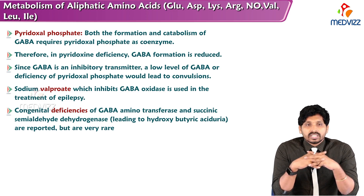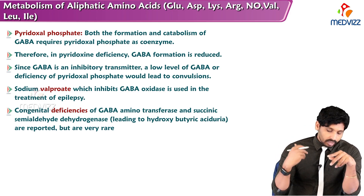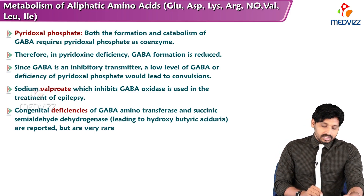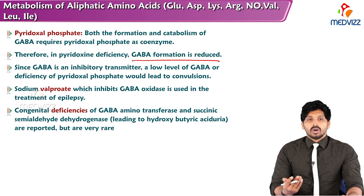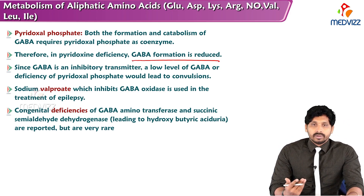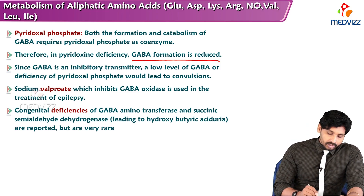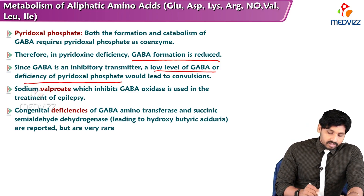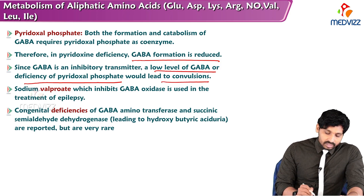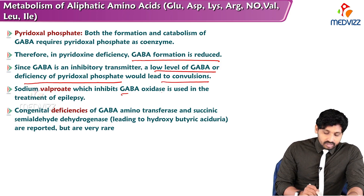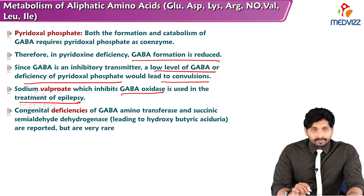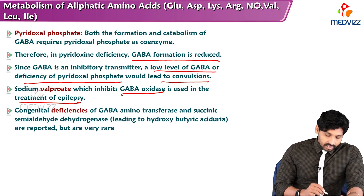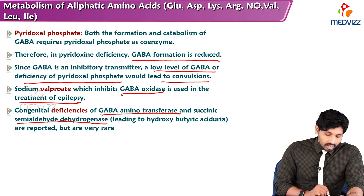PLP is the coenzyme form of vitamin B6. In pyridoxal deficiency, GABA formation is reduced. Since GABA is an inhibitory neurotransmitter, low levels of GABA or deficiency of pyridoxal phosphate lead to convulsions. Sodium valproate, which inhibits GABA oxidase, is used in the treatment of epilepsy. Congenital deficiencies of GABA aminotransferase and succinic semialdehyde dehydrogenase are reported but very rare.